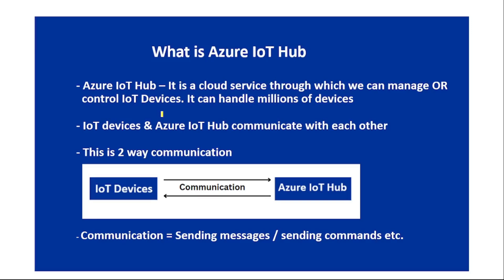We can perform operations on IoT devices remotely, but there must be something enabling those operations — and that is Azure IoT Hub. Azure IoT Hub is a cloud service through which we can manage or control IoT devices, and it can handle millions of devices. IoT devices and Azure IoT Hub communicate with each other in two-way communication, as shown in this diagram — communication meaning sending messages or commands.